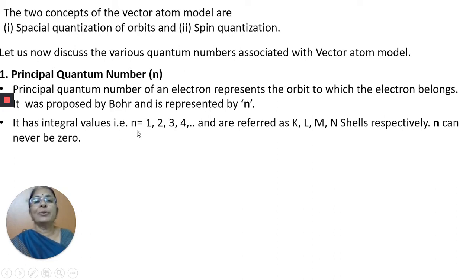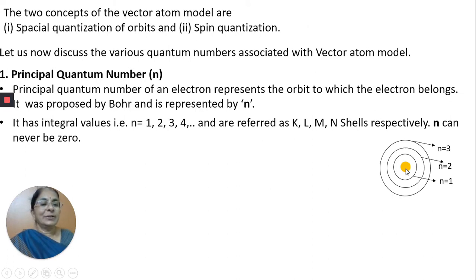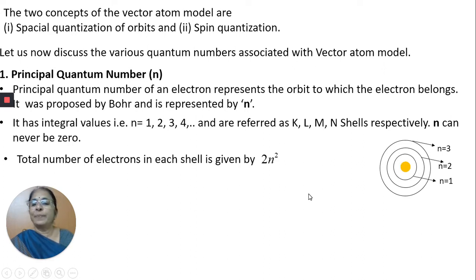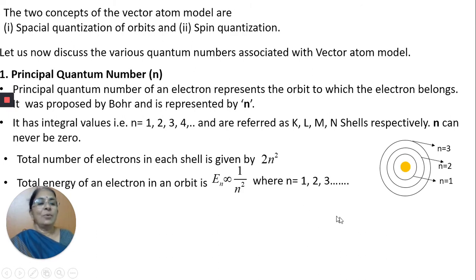If n equals 0, the electron would be inside the nucleus, so n can never be equal to 0. You can see in the diagram: this is the nucleus, this is the first orbit or first shell, second shell, third shell, named as K-shell, L-shell, M-shell and so on. The number of electrons in an orbit is given by 2n², where n is the principal quantum number. The total energy of the electron in a particular orbit is proportional to 1/n².